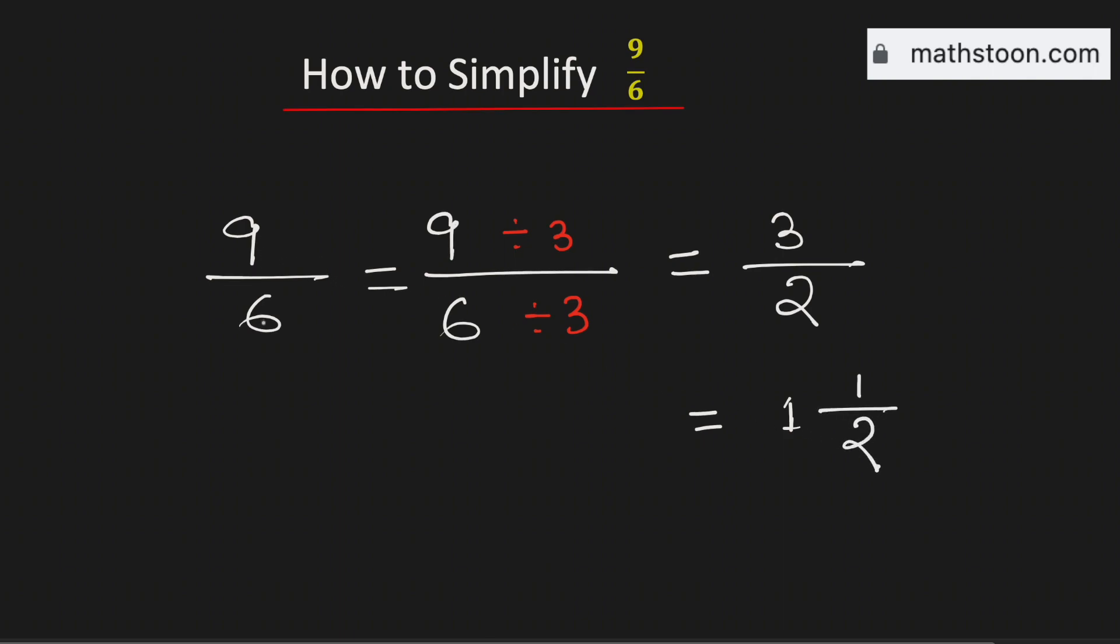Therefore 9 over 6 as a mixed number is equal to 1 and 1 half and this is our final answer. Thank you for watching.